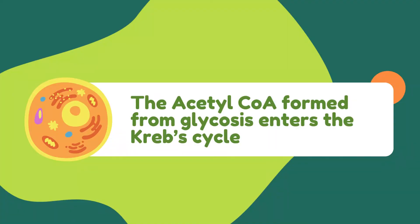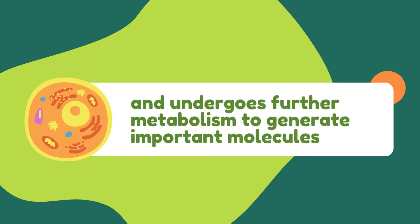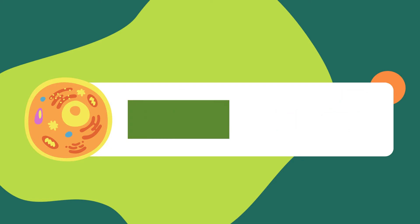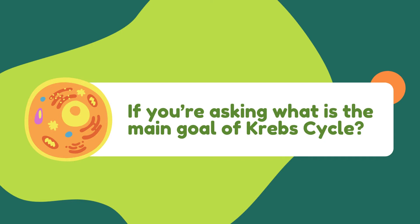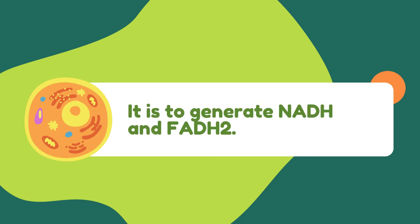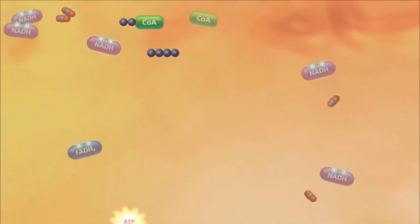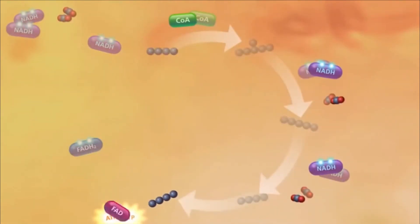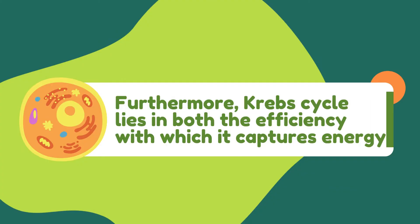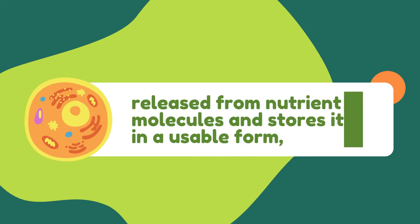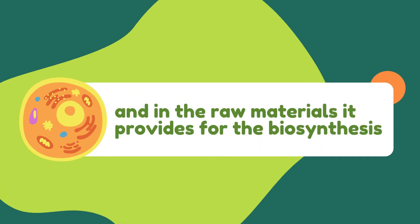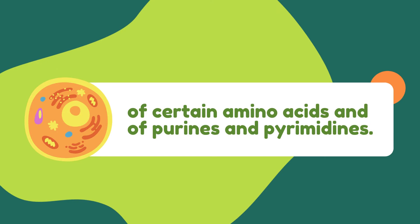The acetyl-CoA, formed from glycolysis, enters the Krebs cycle and undergoes further metabolism to generate important molecules for future use in the electron transport chain (ETC). The main goal of the Krebs cycle is to generate NADH and FADH2. Furthermore, the Krebs cycle's significance lies in both the efficiency with which it captures energy released from nutrient molecules and stores it in a usable form, and in the raw materials it provides for the biosynthesis of certain amino acids and of purines and pyrimidines.